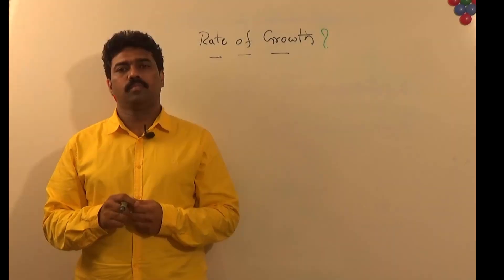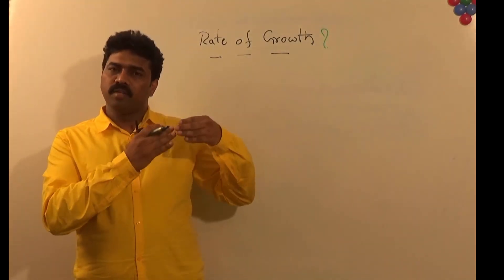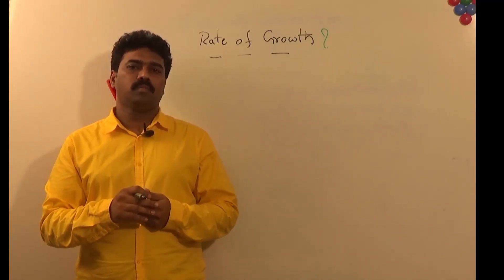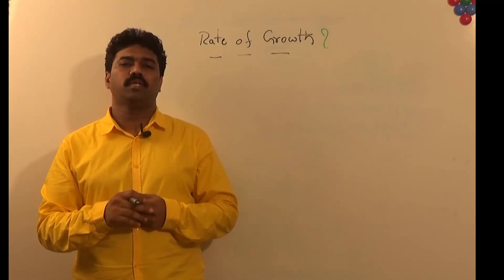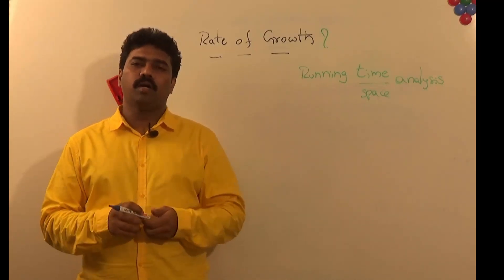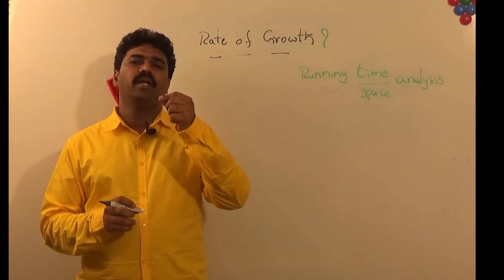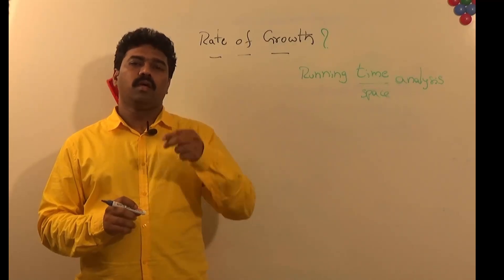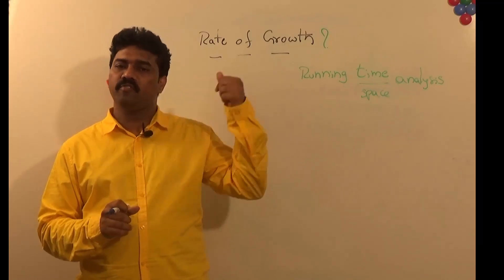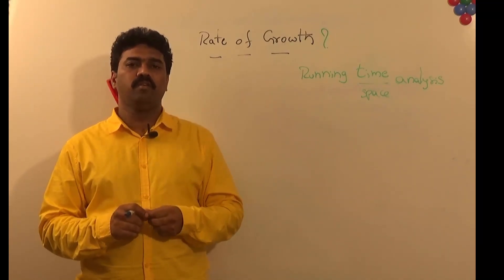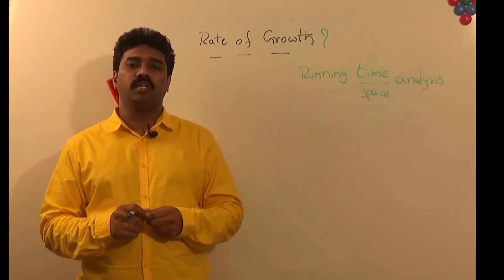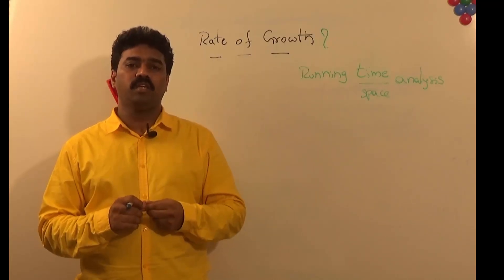What is rate of growth? Running time analysis is the algorithm's behavior in terms of input — how the algorithm behaves as we keep increasing the input size. Rate of growth is the representation of the running time or running space of the algorithm. The behavior of the algorithm is defined by the rate of growth: at what rate is the algorithm taking time or space for solving the given problem as we increase input size?